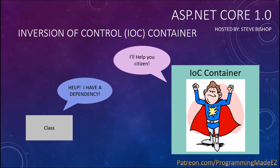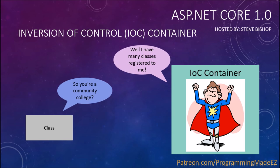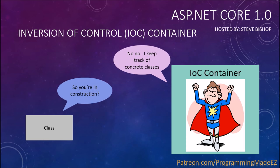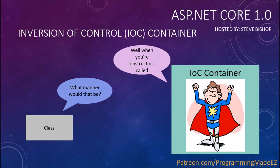The IOC container says 'I'll help you citizen.' The class asks, 'But what can you do?' The container replies, 'Well I have many classes registered to me. I keep track of concrete classes. Well in a manner of speaking, when your constructor is called I provide the concrete classes you require.'